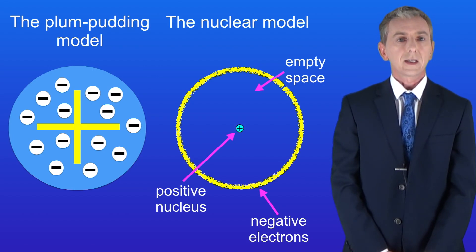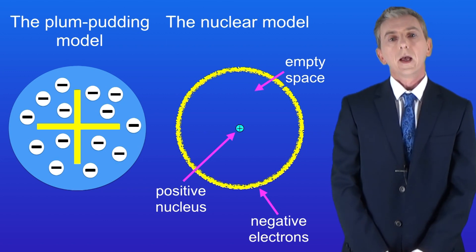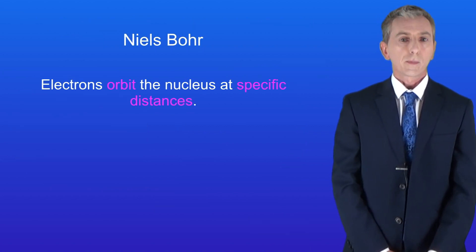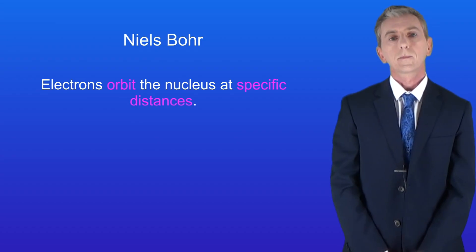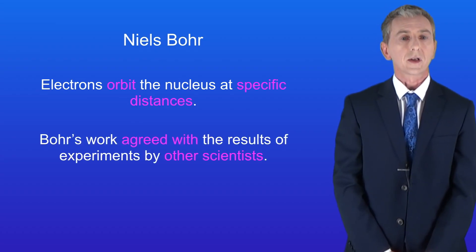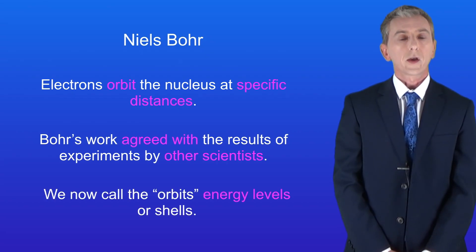Now we've already seen that the electrons are found on the edge of the atom. The scientist Niels Bohr proposed that electrons orbit the nucleus at specific distances rather than just in a general area. Bohr's proposal was accepted because it agreed with the results of experiments by other scientists. We now call the orbits energy levels or shells.